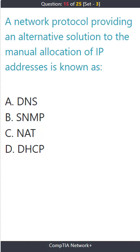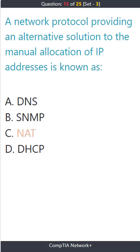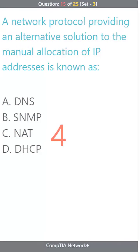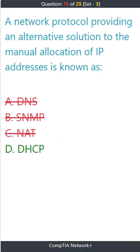Question 15. A network protocol providing an alternative solution to the manual allocation of IP addresses is known as: A. DNS. B. SNMP. C. NAT. D. DHCP. The correct answer is D. DHCP.